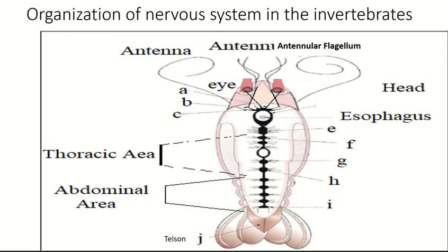Here is a diagram showing the body of a dissected shrimp. As you can see, its nervous system is simple and consists of a long ganglionic chain, starting at the head and ending at its telson.